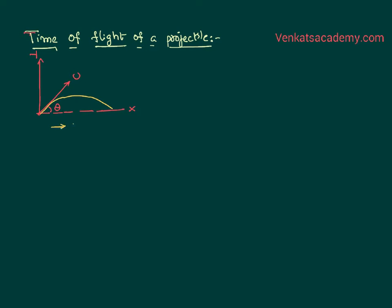This is the displacement along x-direction. I have proved x is nothing but equal to u cos theta into t. Why? Because this u can be resolved into components as ux along x-axis and uy along y-axis. We know ux is nothing but u cos theta.